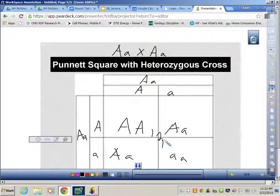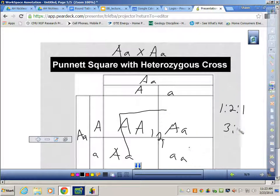There's two of these like this. That's why it's a 1 to 2 to 1 genotypic ratio. But three of them would be dominant, whereas this one would be recessive. So the phenotype is 3 to 1, whereas the genotype is 1 to 2 to 1.